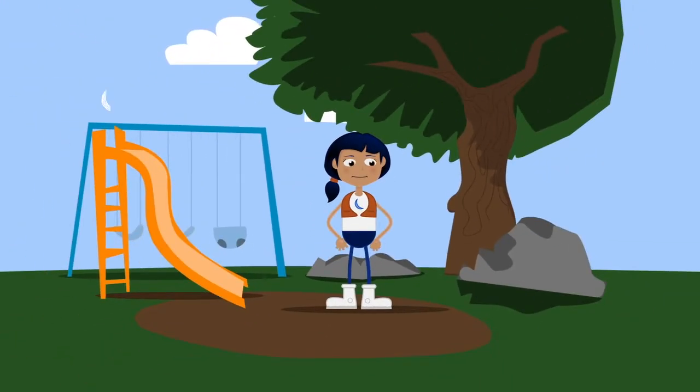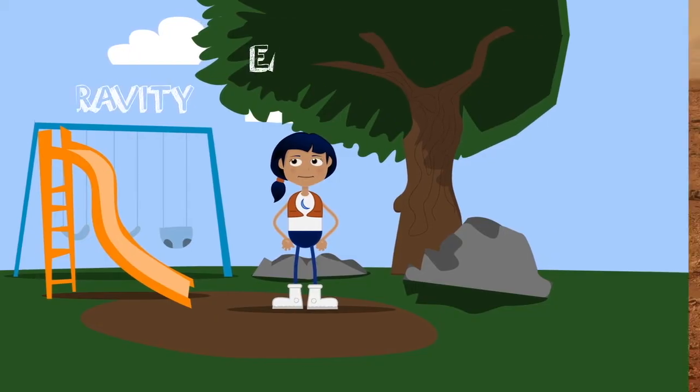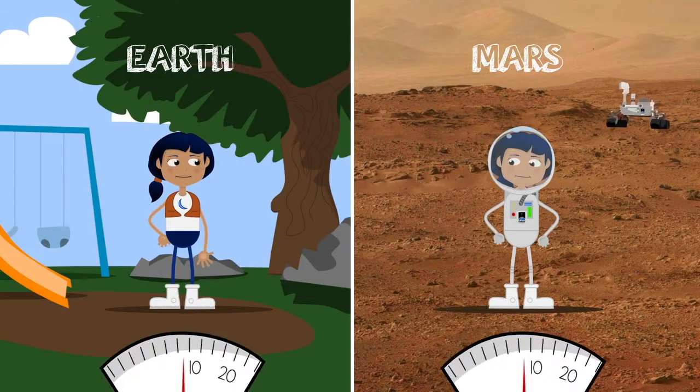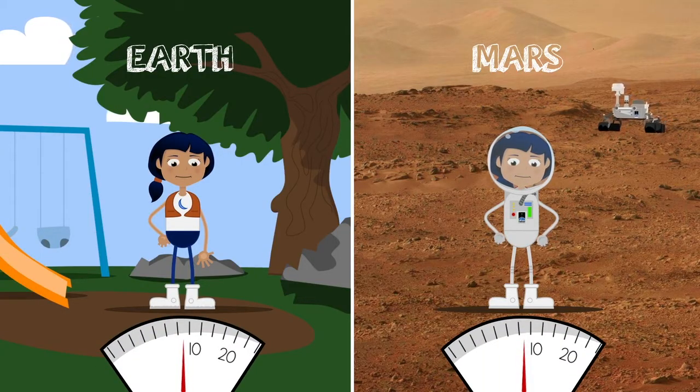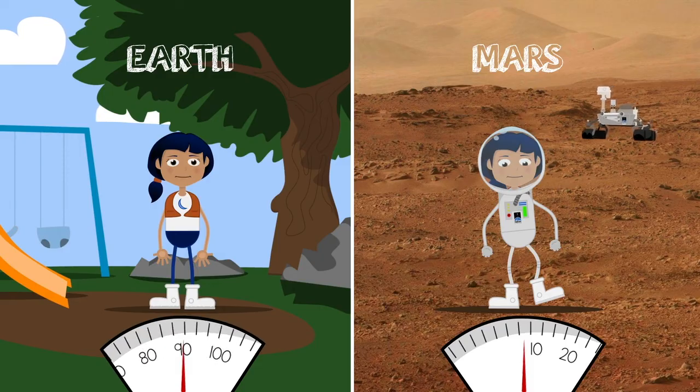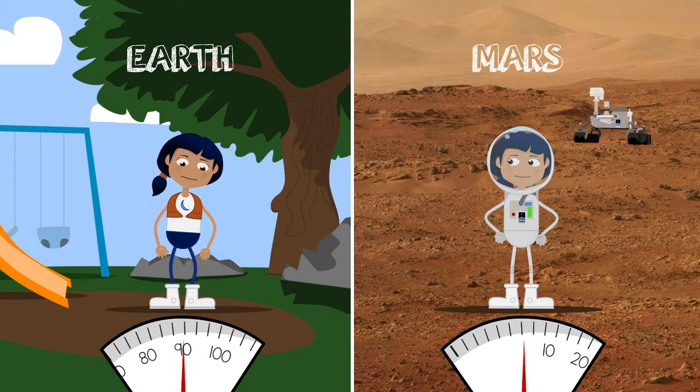Lastly, let's talk about gravity. The gravity on Mars is about one-third of what it is on Earth. Take your weight, divide it by 3. That's how much you would weigh on Mars. So let's say you weigh 90 pounds on Earth. On Mars, you would weigh only 30 pounds.